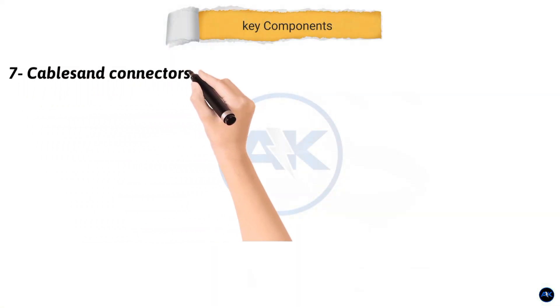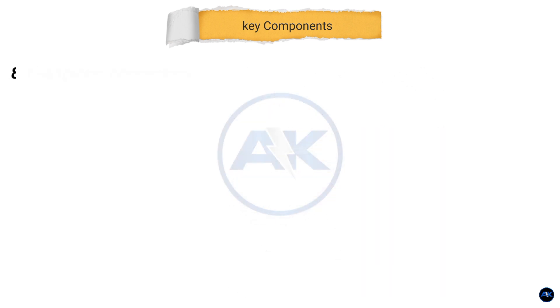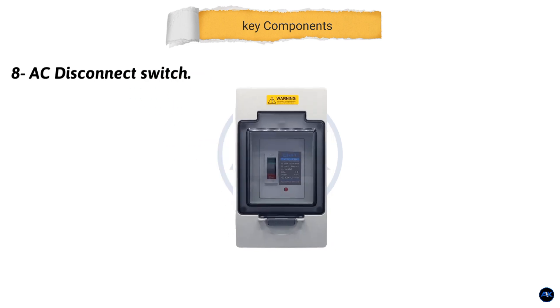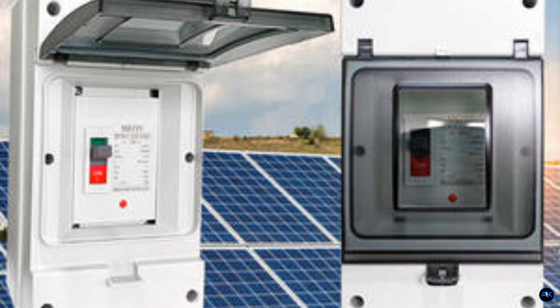Seventh, cables and connectors. Essential for connecting all the components. We'll be using appropriate gauge cables for both DC and AC. Eighth, AC disconnect breakers. They protect installers, maintenance personnel, and homeowners from electrical shock when working on the solar system.